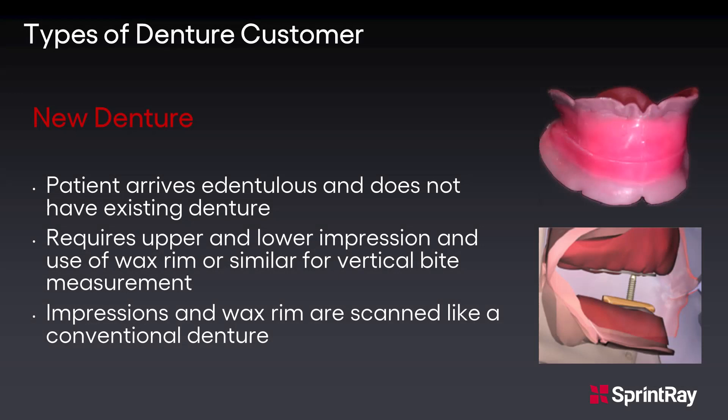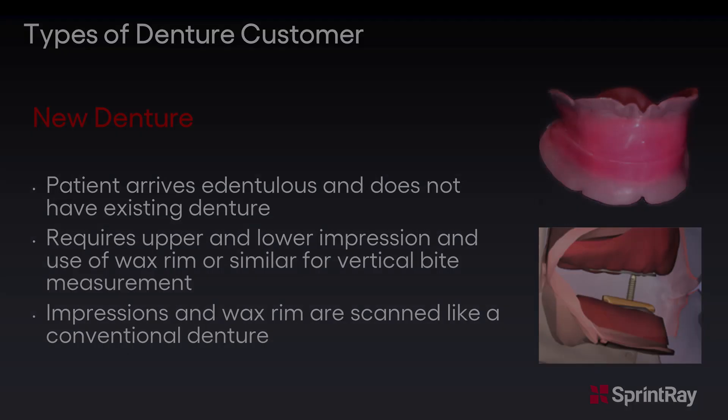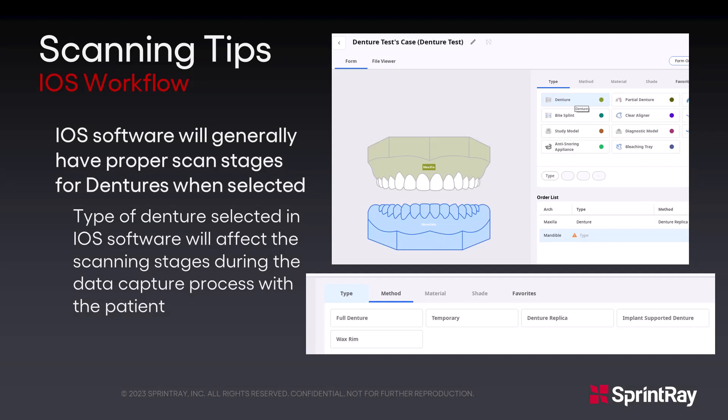A new denture is for a patient arriving edentulous that does not have an existing denture. A traditional impression is taken and a wax rim or similar is used to set the correct bite height. Then the occlusal plane and midline are marked, and the impressions and wax rim are scanned like a conventional denture. Most intraoral scanning software will provide denture type selections to help guide you through the proper scanning stages for each denture type. Please review your software for the proper selection.